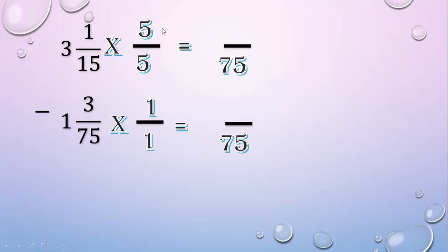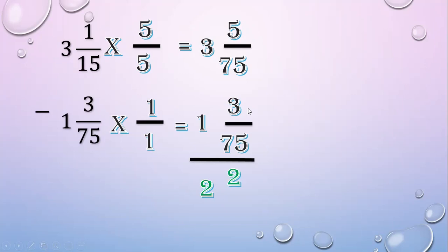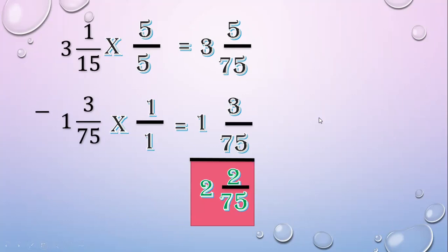Multiply the numerators: 1 times 5 equals 5; 3 times 1 equals 3. Copy the whole numbers. Subtract the whole numbers: 3 minus 1 equals 2. Subtract the numerators: 5 minus 3 equals 2. Copy the denominator: 75. The final answer is 2 and 2 over 75.